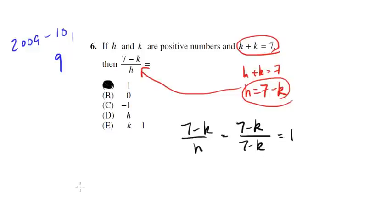Notice as well, we could also have seen the top, 7 minus k is here, we knew that h equals 7 minus k, so we alternately could have just said, well this top thing is h, and the bottom is h, so again it's 1.